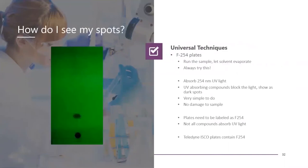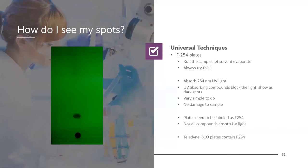So how do you see your spots? We're going to talk about universal techniques that should work on almost every compound. The most easy method is using F-254 plates — always try this first, as F-254 plates are compatible with nearly everything, including spray reagents. F-254 works because many compounds block 254 nanometer light, creating dark spots. When you see the spots, circle them and determine the RF. This is very simple and does not damage the sample.